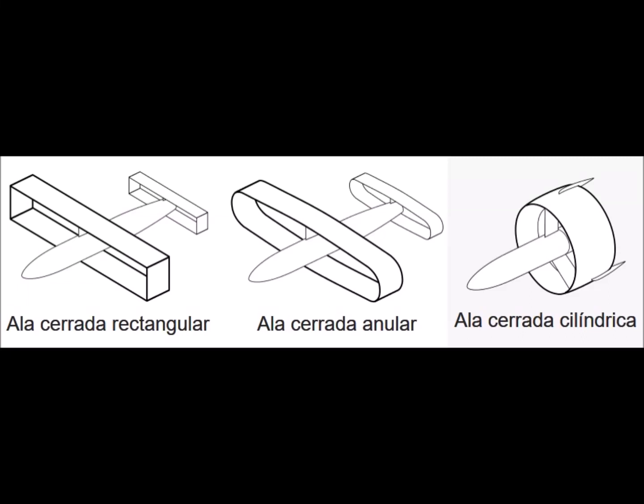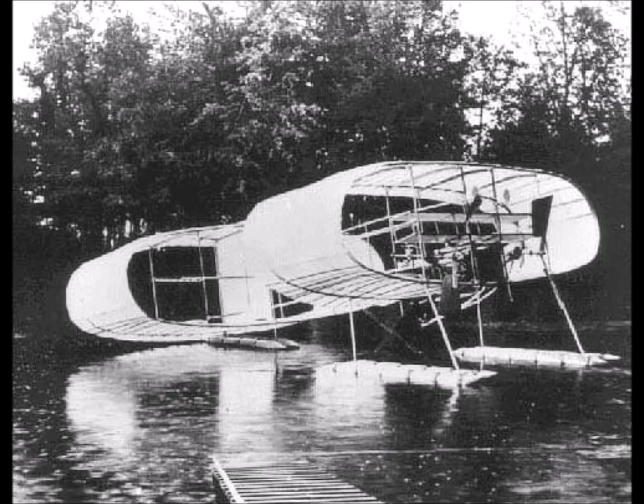A closed wing is a wing that effectively has two main planes, which merge at their ends so that there are no conventional wingtips. An early example of the closed wing was on the Bleriot III aircraft, built in 1906.